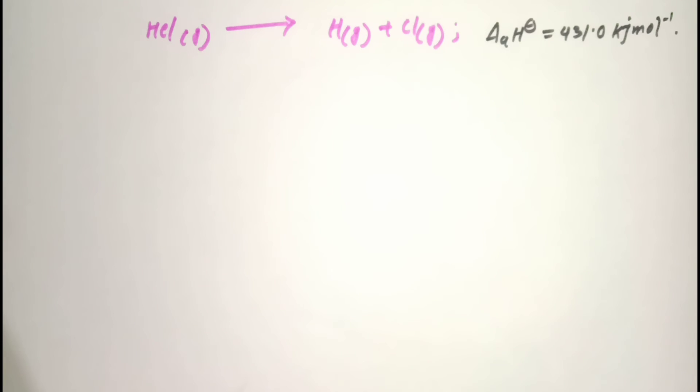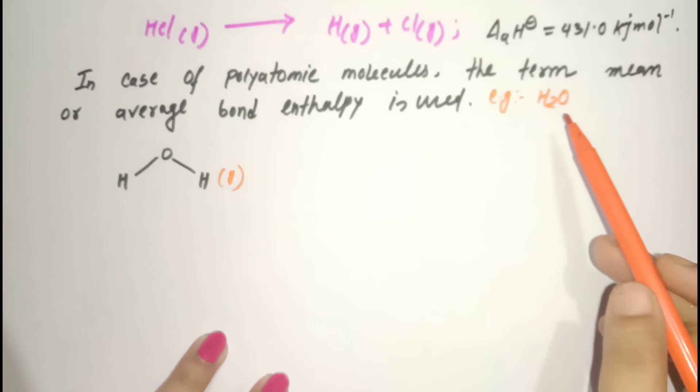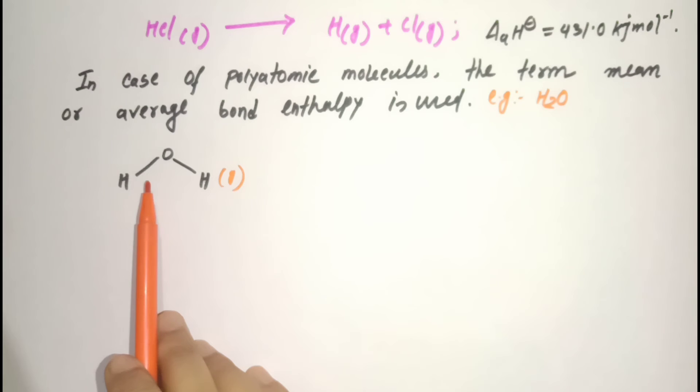But for polyatomic molecules it is quite complicated. Since in case of polyatomic molecules it is quite complicated to find the bond enthalpy, the term mean or average bond enthalpy is used. For polyatomic molecules like water, which has two O-H bonds.